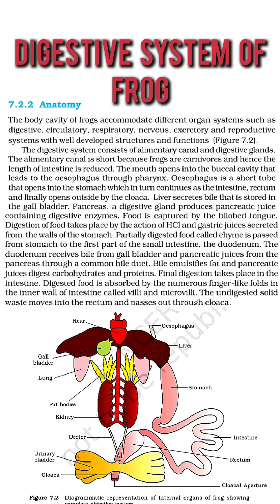The body cavity of frogs accommodates different organ systems such as digestive, circulatory, respiratory, nervous, excretory and reproductive systems with well-developed structures and functions.